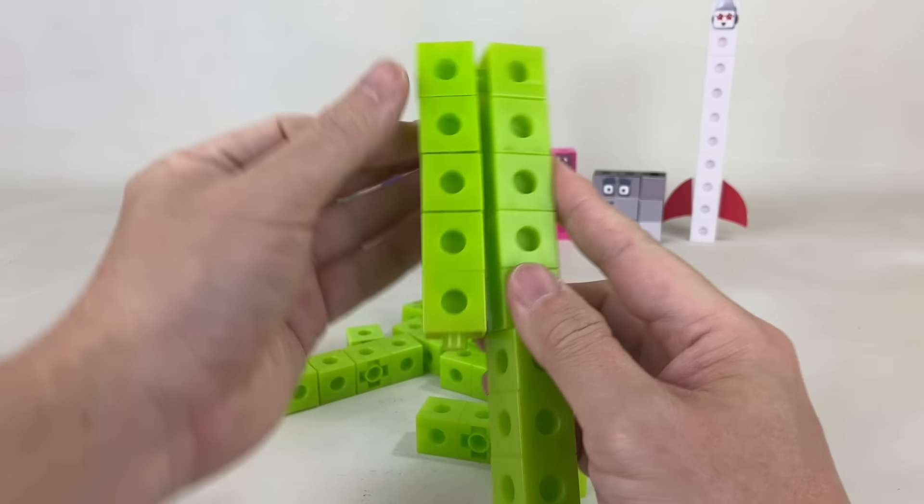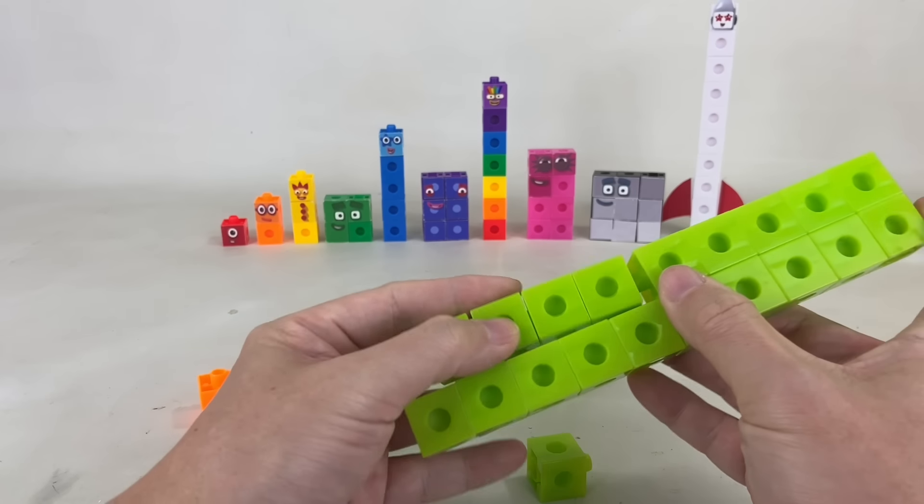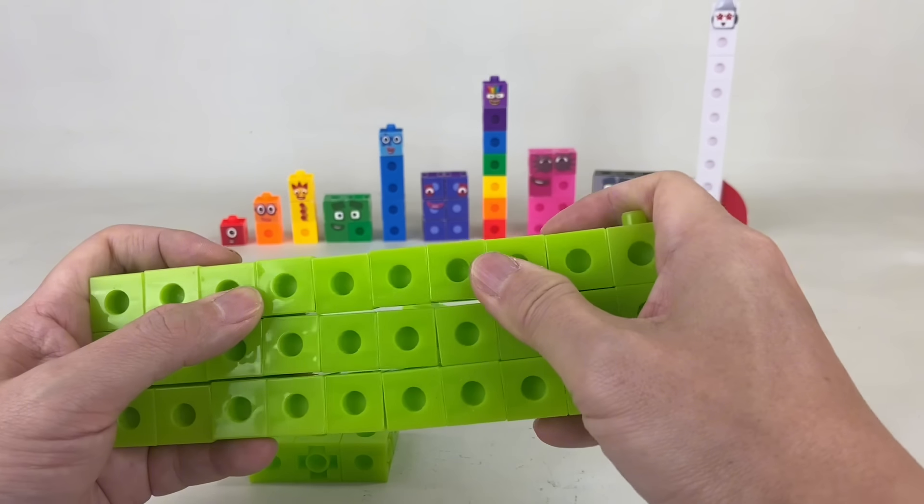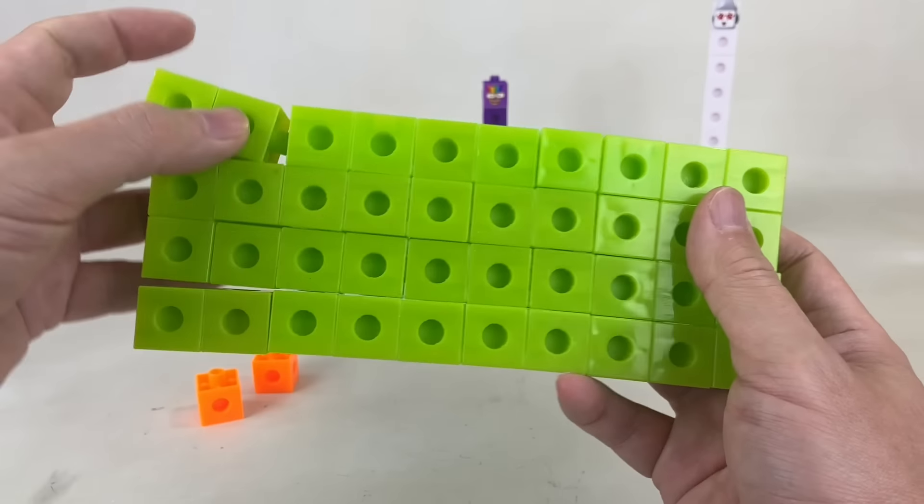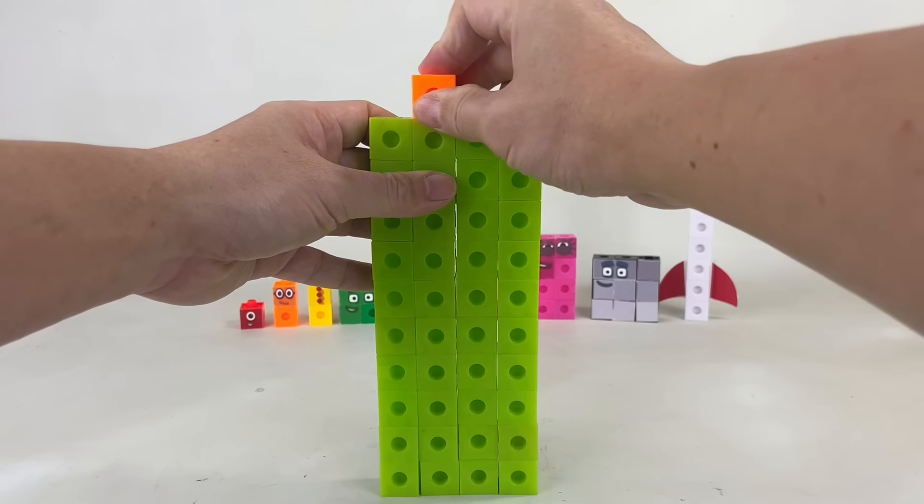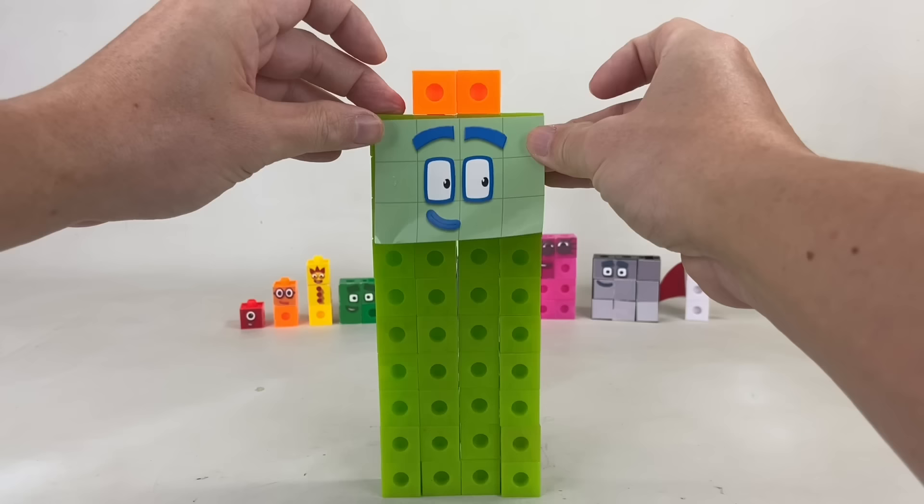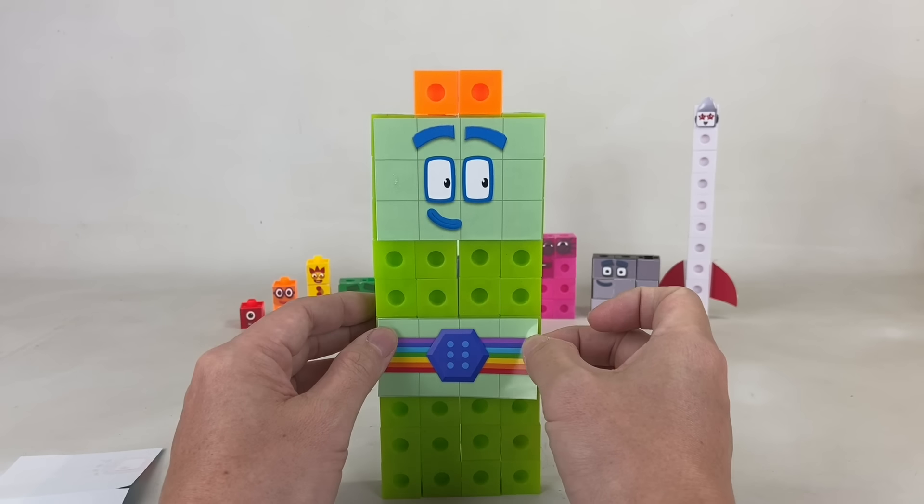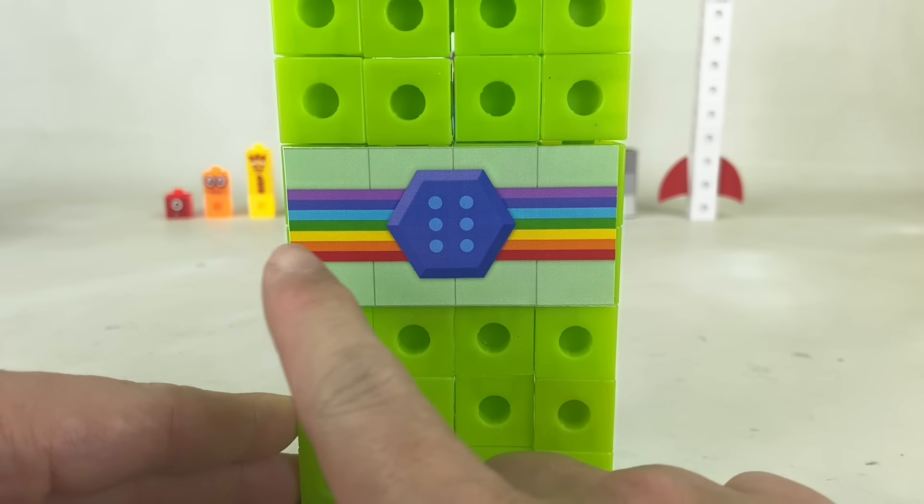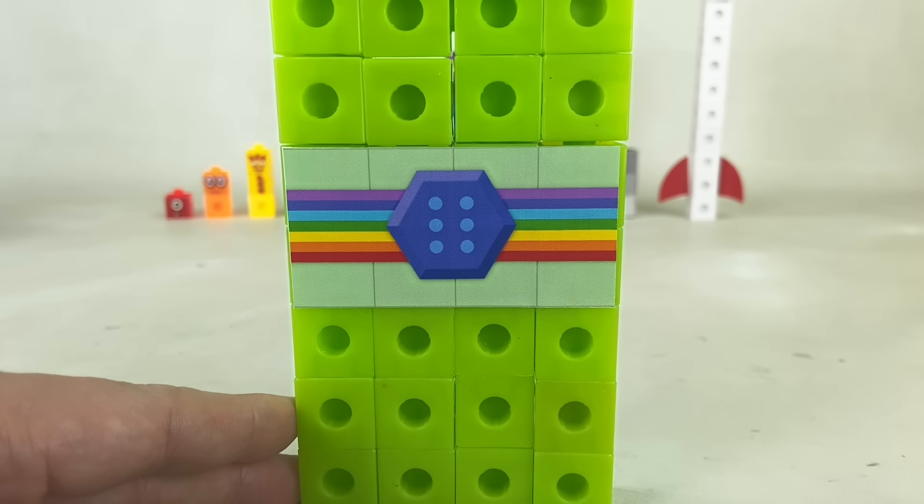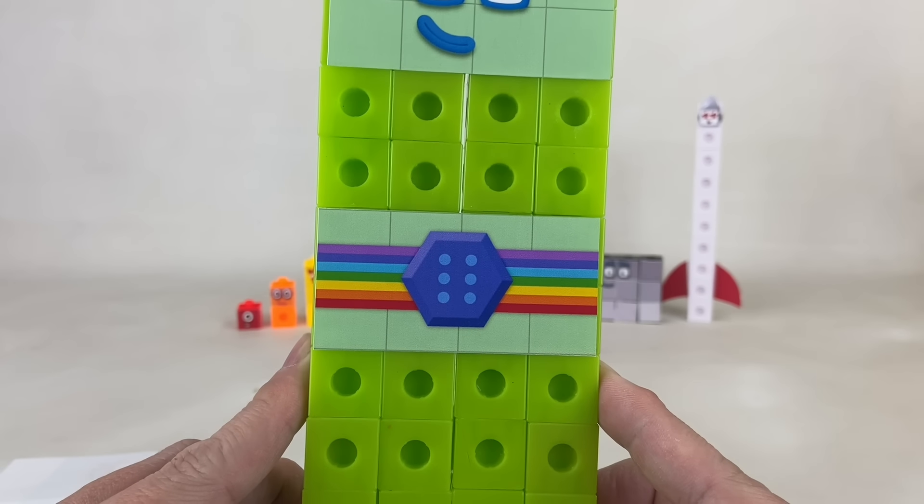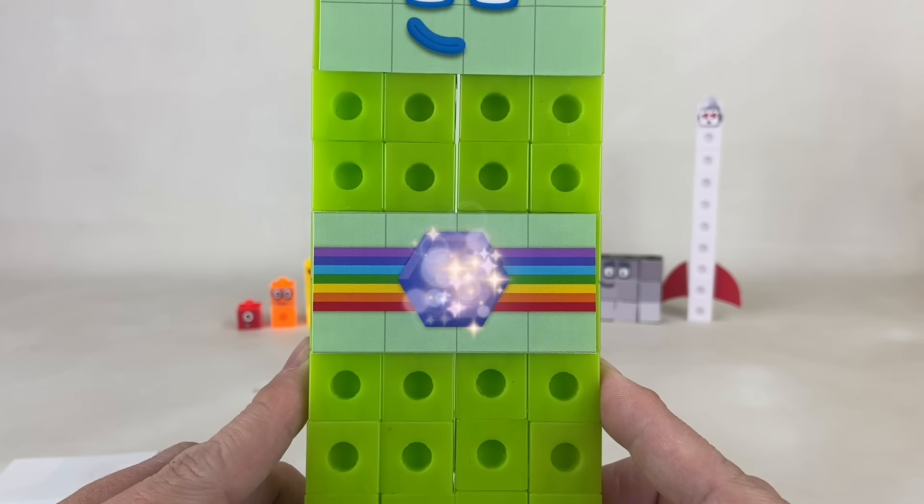42 is the first Number Block to have a teleporting belt. Don't panic! A teleporting belt is how he goes from place to place. 42 is 7 times 6, so sometimes he appears as 6 7s or 7 6s. And because he's made up of 6 7s, his teleporting belt is rainbow colored and it has a hexagon shaped buckle with 6 dots to signify 6 7s. And it glows every time he teleports.